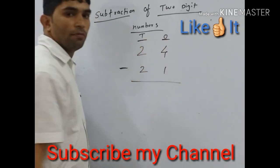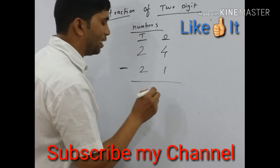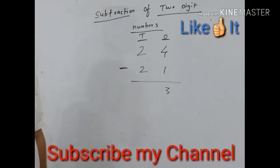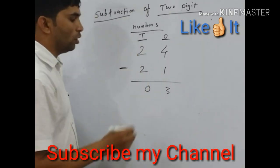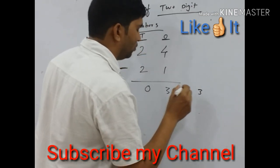We subtract ones place first: 4 minus 1, we get 3. And next number, tens place number: 2 minus 2, we get 0. We get answer 3 here.